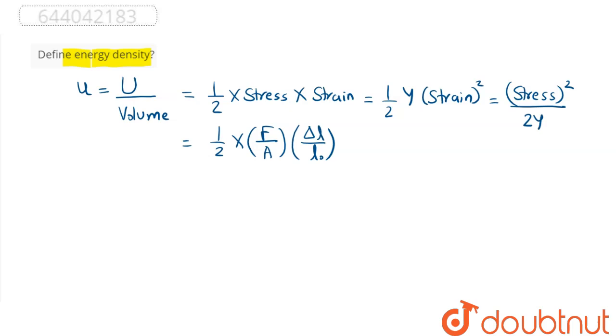So this is our energy density in terms of elasticity. For an elastic wire, we can say energy density is defined simply as elastic energy stored per unit volume in that wire, which is the answer.